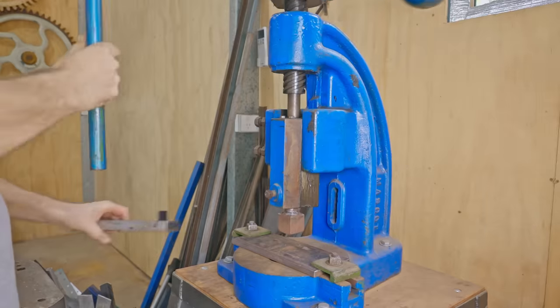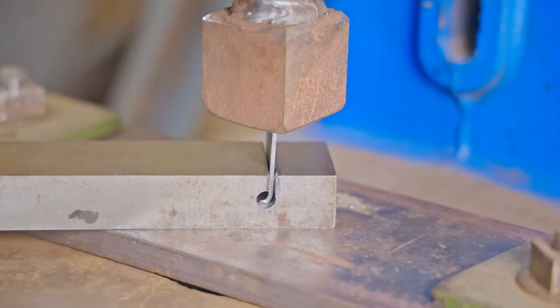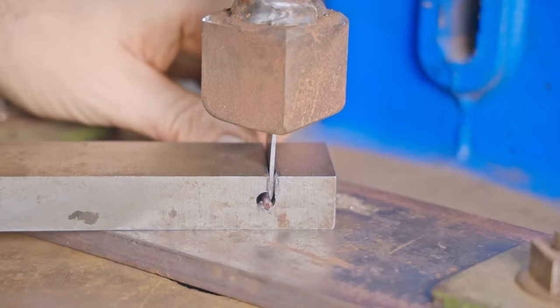I'm using the fly press for this, but any sort of press could be used. I give it a couple of controlled pushes and then I put a nail in to help keep the roll neat and then finish forming it until the roll meets the face of the hinge.